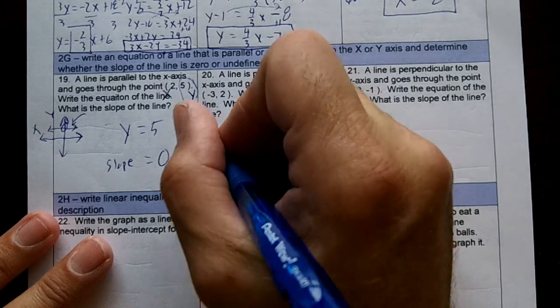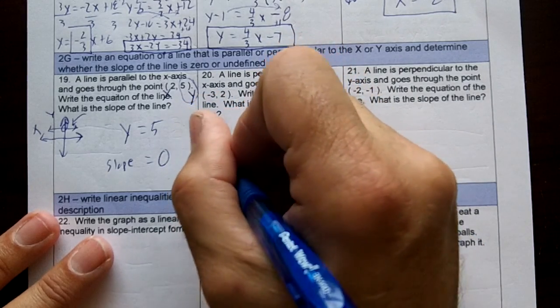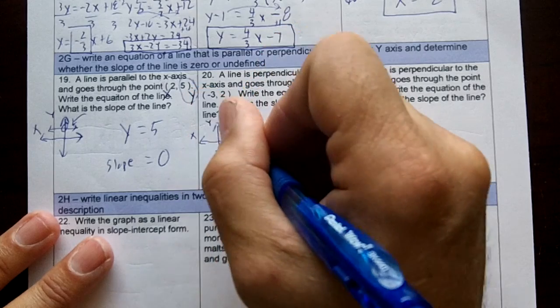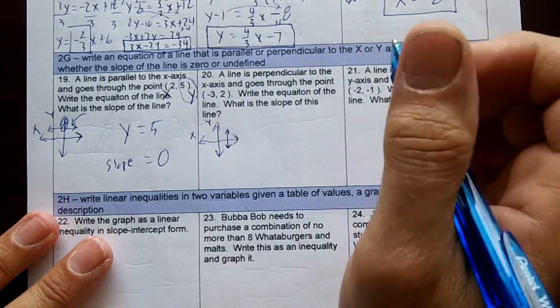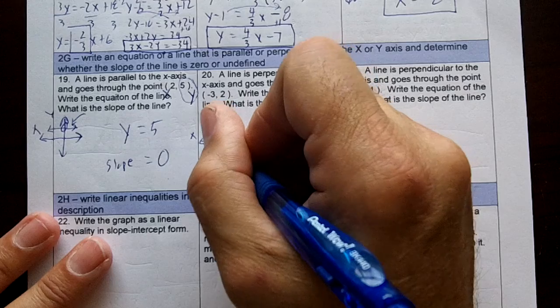A line is perpendicular to the x-axis, so draw your x and y-axis. This is my x, this is my y. If it's perpendicular to the x-axis, it's going to look like that. It will cross the x.